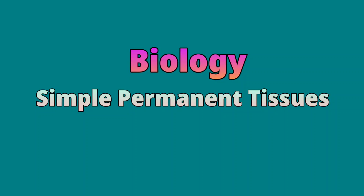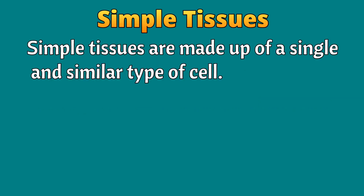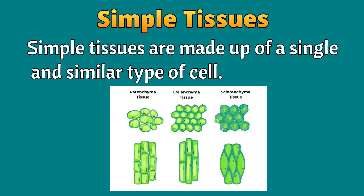Hello students, welcome to biology class. Today's topic is simple permanent tissues. Simple tissues are made up of a single and similar type of cells. Look at this picture — different types of simple tissues you can observe here. Simple tissues can be divided into three types: parenchyma tissue, collenchyma tissue, and sclerenchyma tissue. Let us discuss one by one.